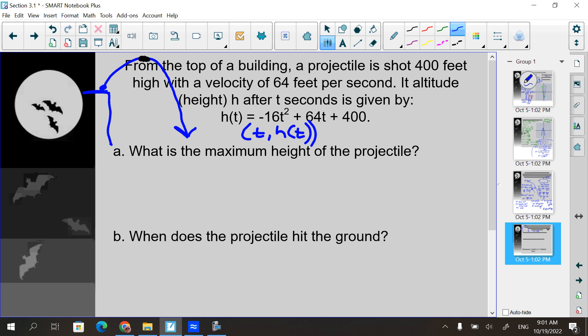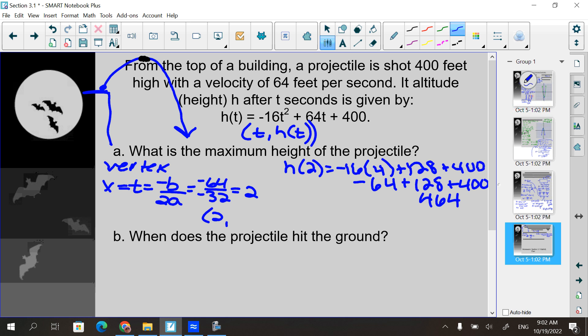Right? Again, it's the same thing. It's just the vertex. So to find the vertex of this, again, I need x or t really equals negative b over 2a. Negative b would be negative 64. 2 times a is negative 32. Divide those, I get 2. This is not the maximum height. This is only the time it takes to get to the maximum height. So now I have to plug it back in up here. h of 2 is negative 16 times 2 squared, which is 4 plus 128 plus 400. This is negative 64 plus 128 plus 400, which is 464. This here is the vertex. What is the maximum height? 464 feet.